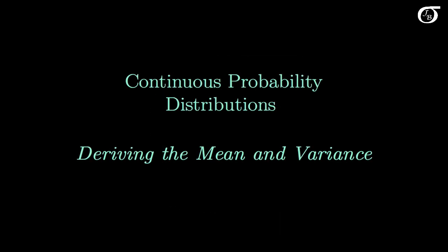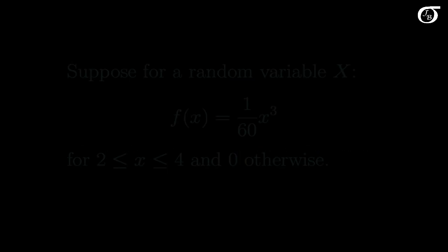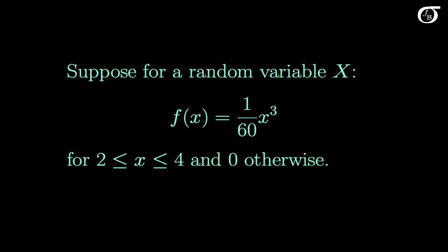Let's look at deriving the mean and variance for continuous probability distributions. This does require some calculus, and I'm going to assume that you are familiar with basic integration. Suppose for a random variable x, the PDF f is equal to 1 over 60 times x cubed, when x is between 2 and 4, and 0 otherwise.